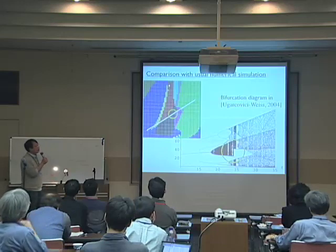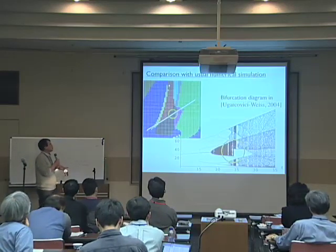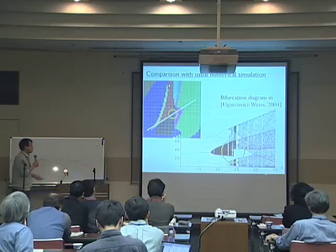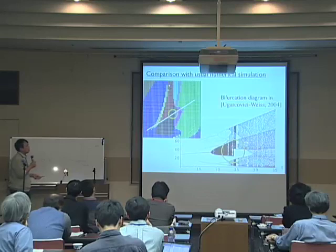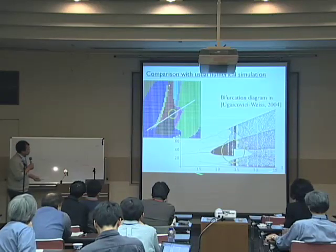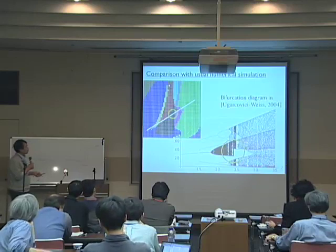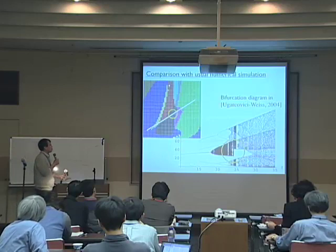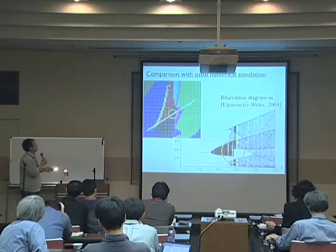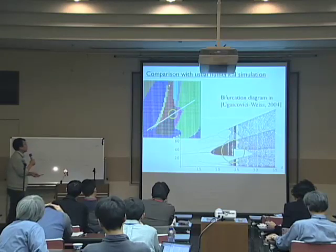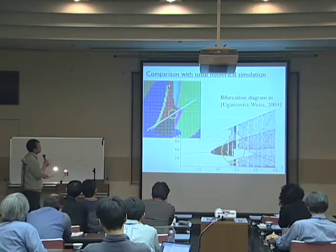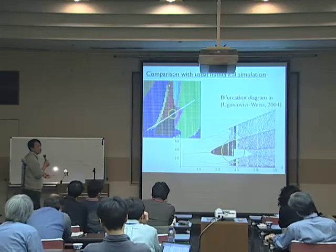The reason we took this nonlinear Leslie model is that there is a paper by Ugargovic and Weiss which presents a very careful numerical study of the dynamics of this model. This is one of the bifurcation diagrams from that paper. In their experiments, they set parameters F1 and F2 to be the same, so essentially there is one parameter to vary, and they obtain that kind of bifurcation picture. We tried to compare how much information of this bifurcation we can obtain from our computation. In particular, we paid attention to the part where the attractor collides with the saddle and then disappears — so it is a kind of boundary crisis type.